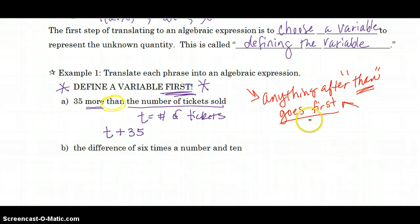Now that seems like a very trivial thing when we're talking about tickets plus 35 or 35 plus tickets. But when it becomes a subtraction problem, which is what we're going to encounter here, the order is very important. So remember that. Anytime you hear the word than, whatever comes after than goes first.